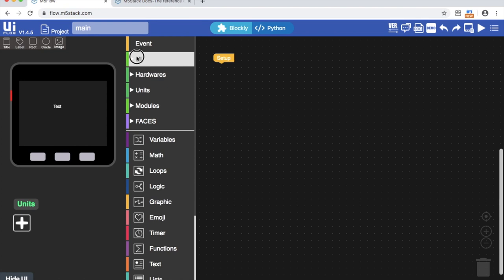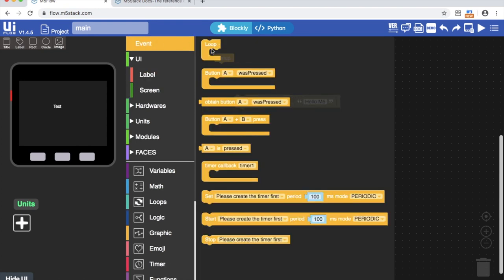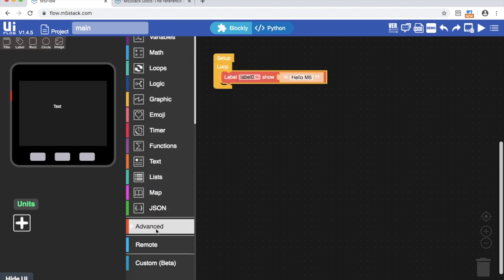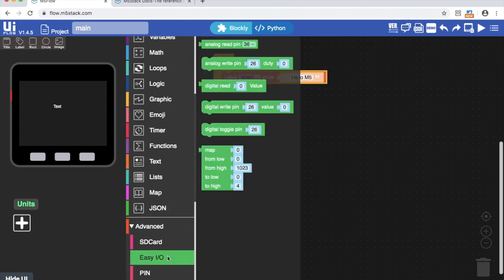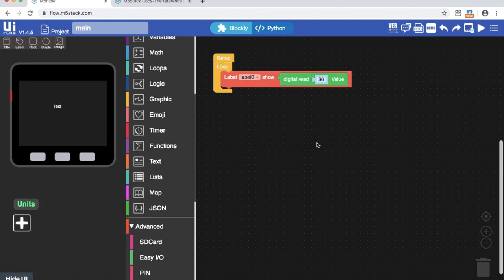We can create a simple program to test this by dragging a label onto the M5 screen, creating a loop and then using the digital read block in the EasyIO panel and setting its value to 36 which is pin 36 found in the black port. We then place that in the label block so that we can display it on the screen whenever there is a change.